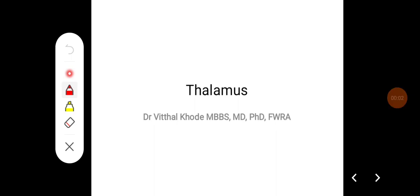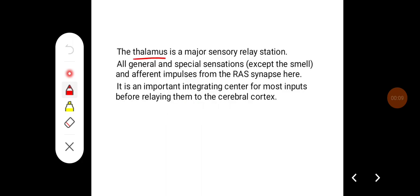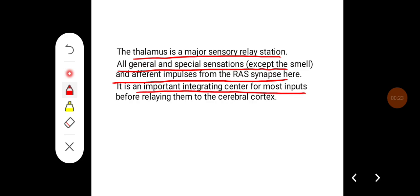In this class we will learn about the thalamus, its functional anatomy, and different functions. The thalamus is a major sensory relay station. All general and specific special sensations, except for smell, and afferent impulses from the reticular activating system synapse here. It is an important integrating center for most inputs before relaying them to the cerebral cortex.